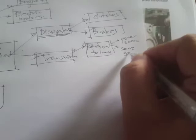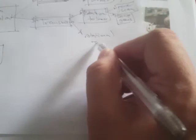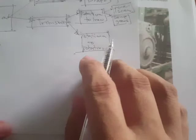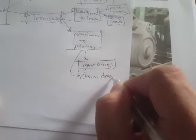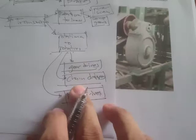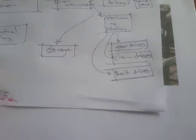You can also have rotational-to-rotational transmission, where both input and output are rotational. Examples include gear drives, chain drives, and belt drives. Belt drives are our current topic. Lastly, there are machine elements for storage — instead of transmitting power, they store it. Examples are flywheels and springs.